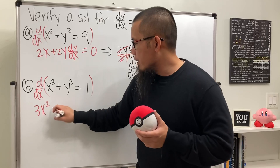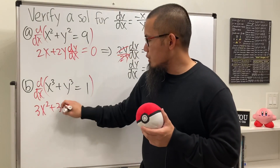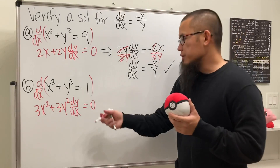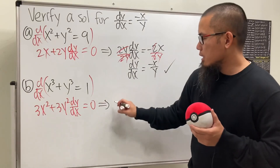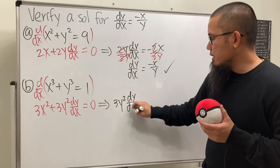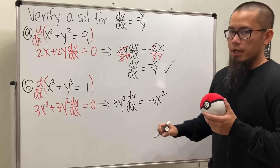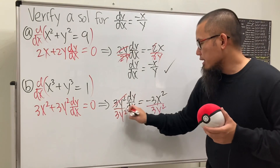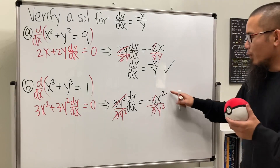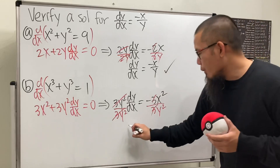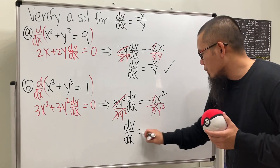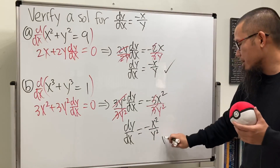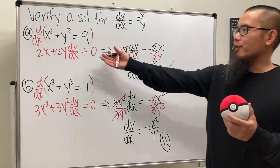For the second implicit example with x³ + y³ = 1: differentiating gives 3x² + 3y²·(dy/dx) = 0. Rearranging: dy/dx = -x²/y². This is not the same as -x/y, so the second function is not a solution — only the first one works for that differential equation.